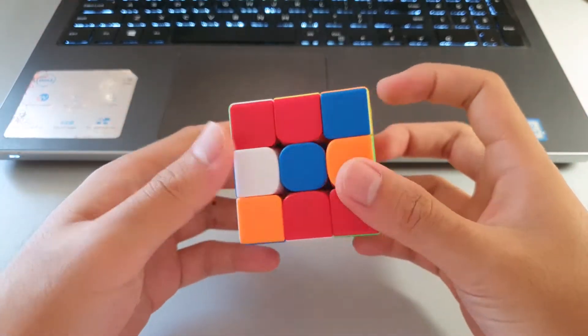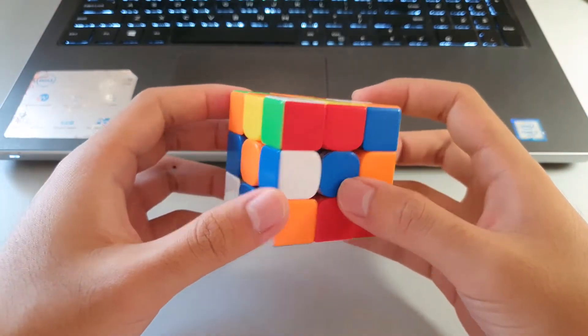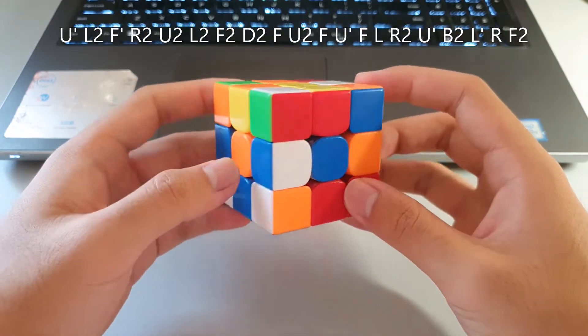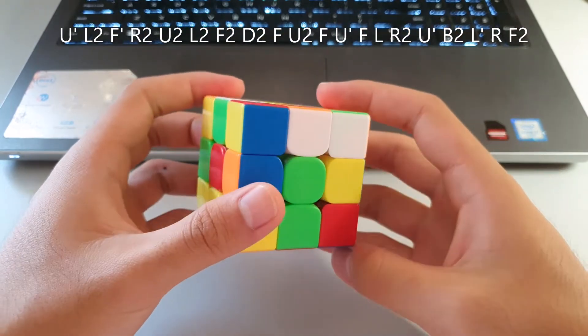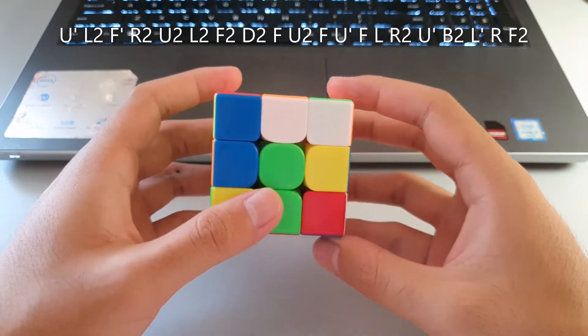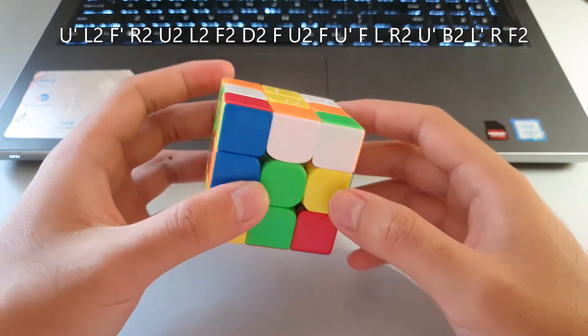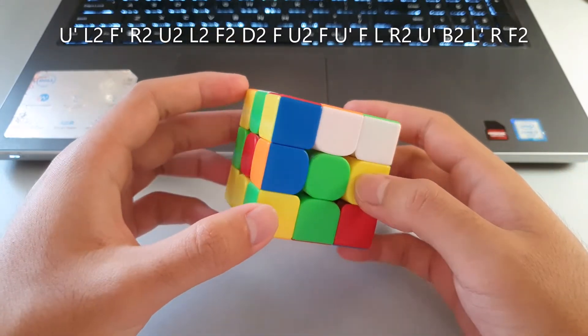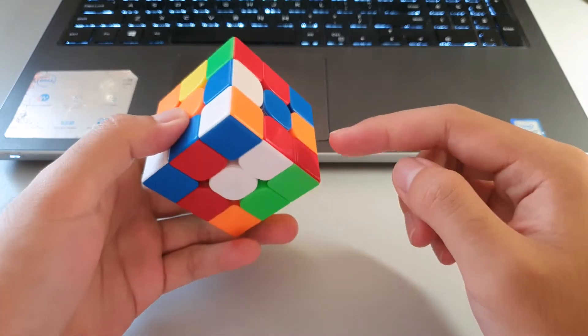What's going on everyone, just making a quick video today on a PB single that I got. It was a 10.48 second PB single. This is the scramble, so I did white cross. My cross pieces